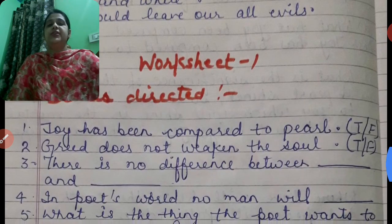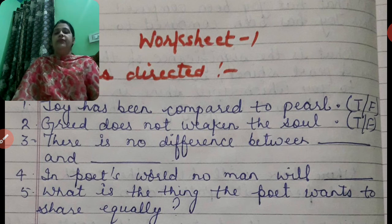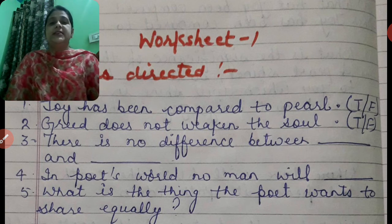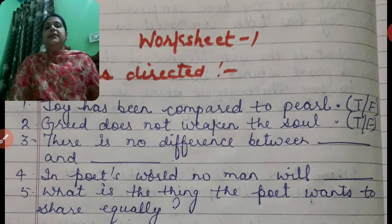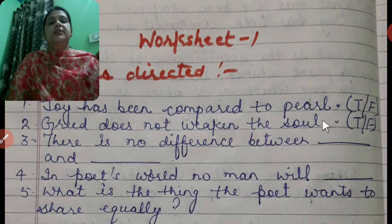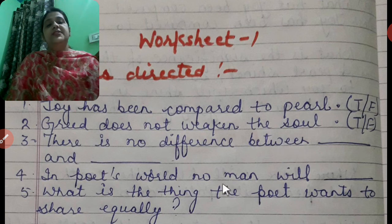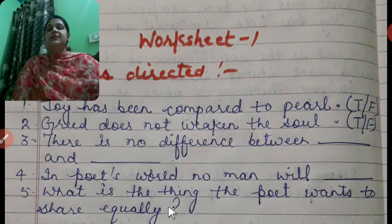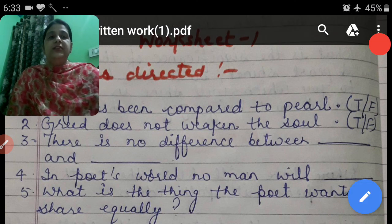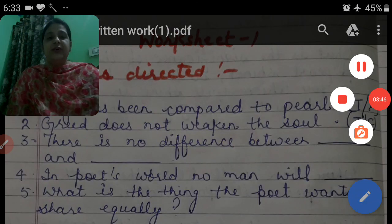Next comes the worksheet, given in the form of 'Do as directed.' First: joy has been compared to a pearl — true or false? Second: greed does not weaken the soul — true or false? Third: there is no difference between dash and dash in the poet's words — no man will dash. What is the thing that the poet wants to share equally? With this worksheet, our chapter will finish. Thank you.